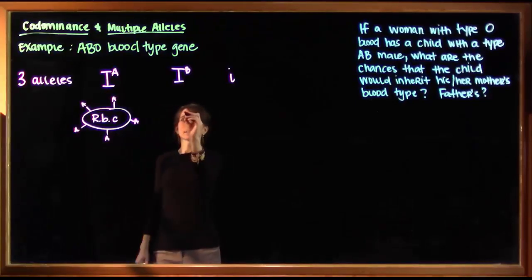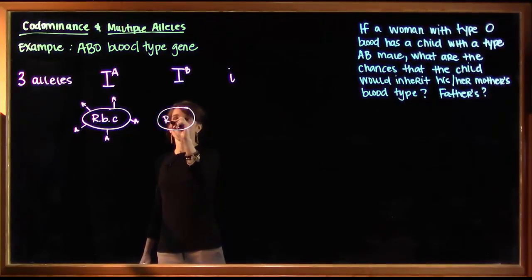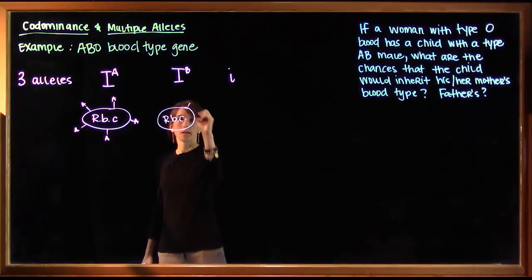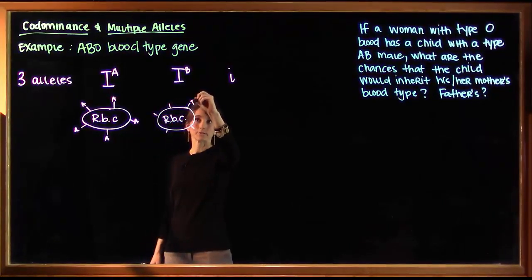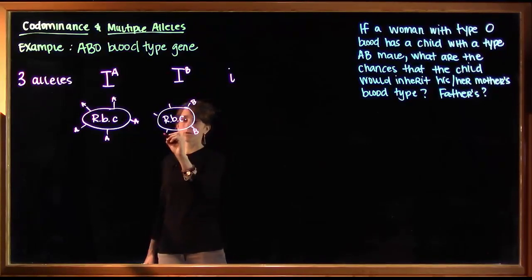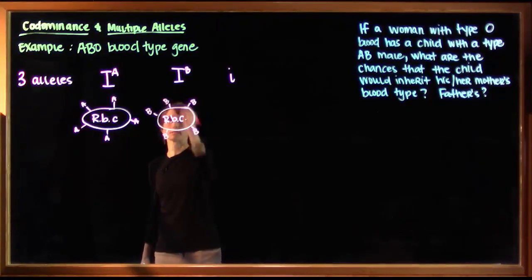If a person has the B allele, they produce an enzyme that alters their little carbohydrate tags slightly differently. So we'll just notate those as little Bs on the outside of the red blood cells.